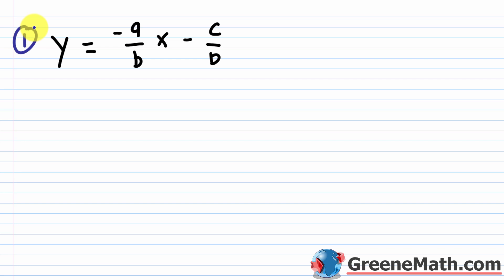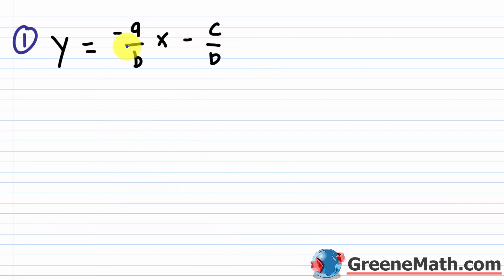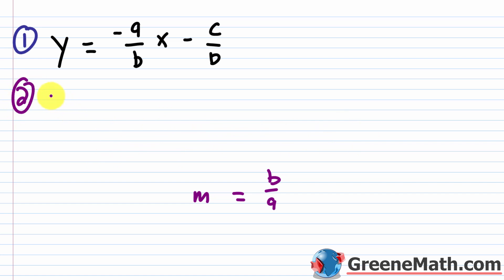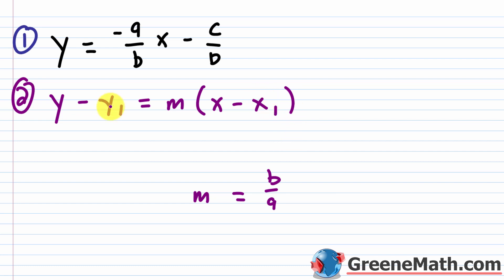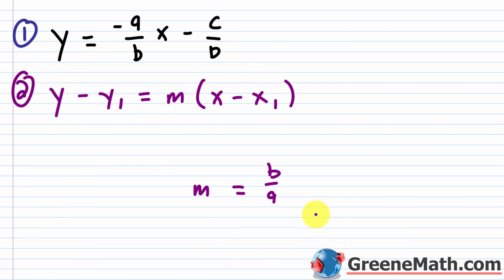Next, we need the equation for the perpendicular line. With perpendicular lines, the product of the slopes equals negative 1. The slope of equation 1 is negative a over b. So if negative a over b times m equals negative 1, multiplying both sides by negative b over a gives m equals b over a. That will be the slope for the perpendicular line.